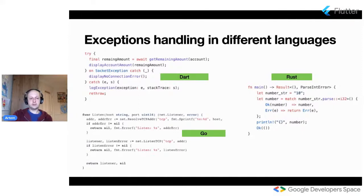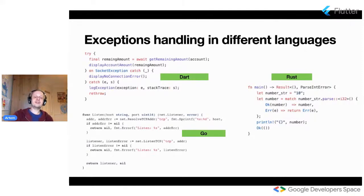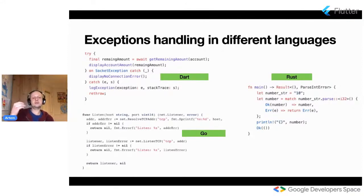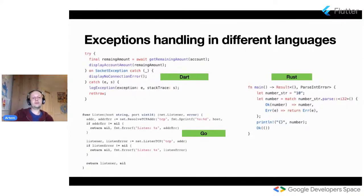Not all languages look like this. For example, in Go you have another conception. If a function can return an error, then it should return an error, and you should handle this error after you get the result from the function. Your function will return a tuple — a value and an error — and you should decide what to do with the error right there. You can re-throw the error upstream, but this is very obvious from the code. I think it gives you the understanding of how it looks in different languages.